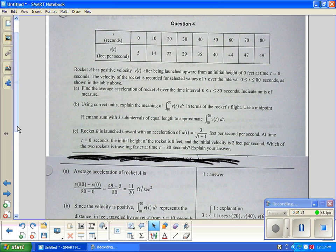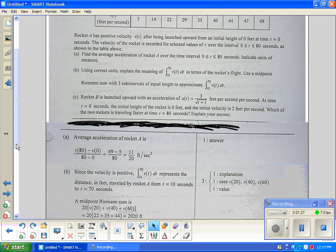First of all, it's seconds times feet per second. Do you guys agree this is the amount of feet? It's the distance of traveling feet. Here's what the explanation is. Since the velocity is positive, ten to seventy represents the distance in feet traveled by the rocket from time ten to time seventy. You need to state distance in feet from time ten to time seventy to get credit.